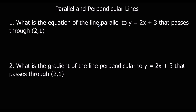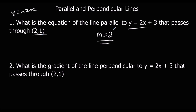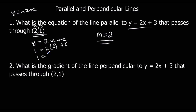What is the equation of a line parallel to y equals 2x plus 3 that passes through (2, 1)? Parallel means same gradient, so m is 2. Finding the equation of a line using y equals mx plus c, we substitute in 2: y equals 2x plus c. Now we need to find c — substitute in x equals 2 and y equals 1. So 1 equals 4 plus c, therefore c is minus 3. So the equation is y equals 2x minus 3.